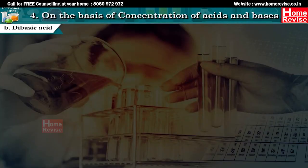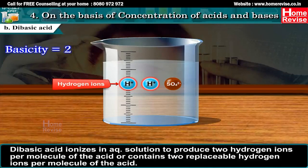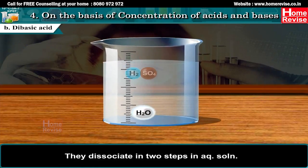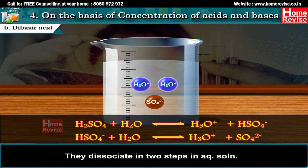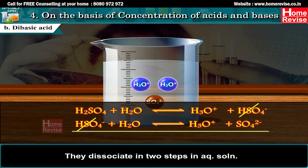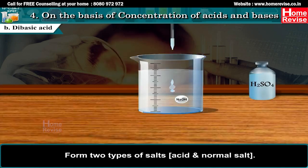B. Dibasic acid (basicity = 2): ionizes in aqueous solution to produce 2 hydrogen ions per molecule. Dissociates in two steps. H2SO4 plus H2O reversibly gives H3O+ plus HSO4-; HSO4- plus H2O reversibly gives H3O+ plus SO42-. Net reaction: H2SO4 plus 2H2O reversibly gives 2H3O+ plus SO42-.